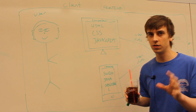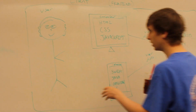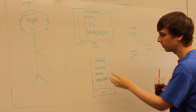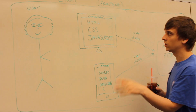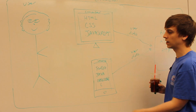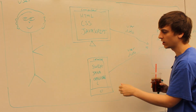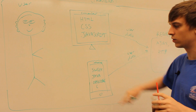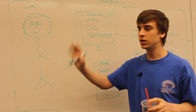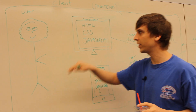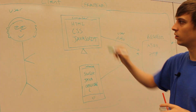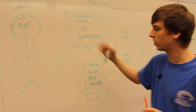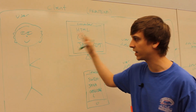Here's how client-server architecture works: basically you have a user with some kind of user interface — let's say it's a website or an iPhone. The website can be coded in HTML, CSS, and JavaScript; an iPhone maybe in Swift; Android maybe in Java. The user is interacting with these interfaces, which take input from the user.